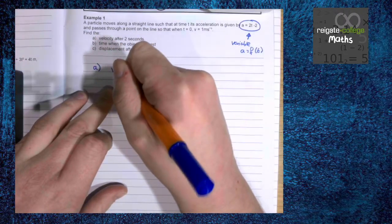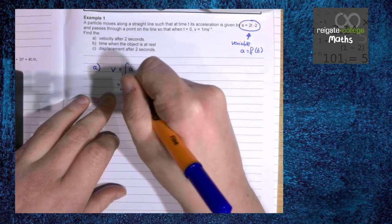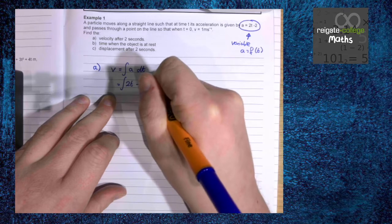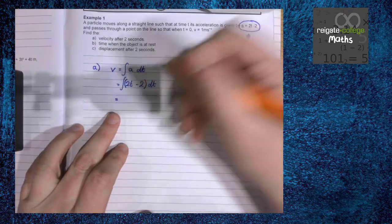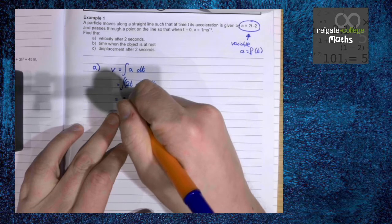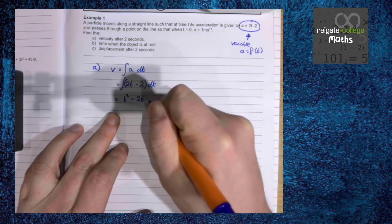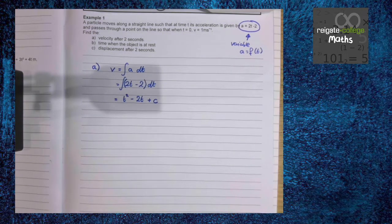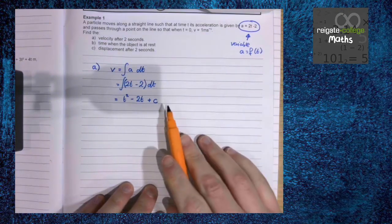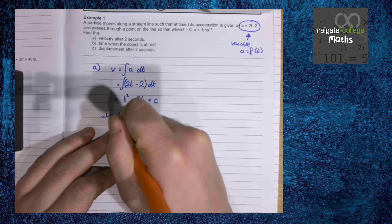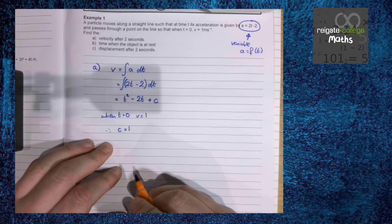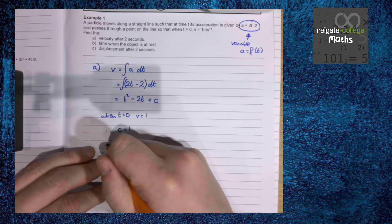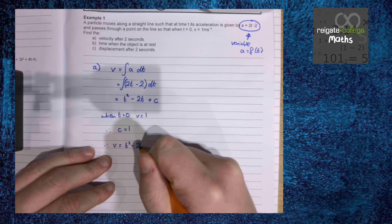So we're given the initial velocity, we know the acceleration and we want to find the velocity after two seconds. We know that v is the integral of a, so that is the integral of 2t minus 2 with respect to t. It's very important that you write this step as it shows the examiner you know what you're doing. Then it's just normal integration: increase the power by 1 divided by the new power, and don't forget our plus c. When t is 0, v is 1, so c is 1.